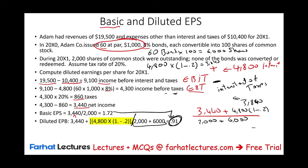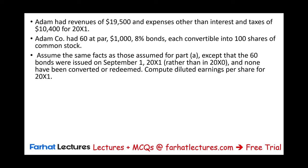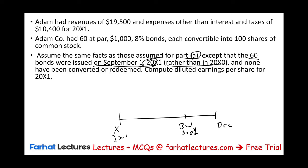Let's change the scenario. Assume the same facts as Part A, except that the 60 bonds were issued September 1st, 20X1, rather than 20X0, and none were converted or redeemed. That means the bonds were not outstanding as of January 1st — we only have interest for September, October, November, and December.